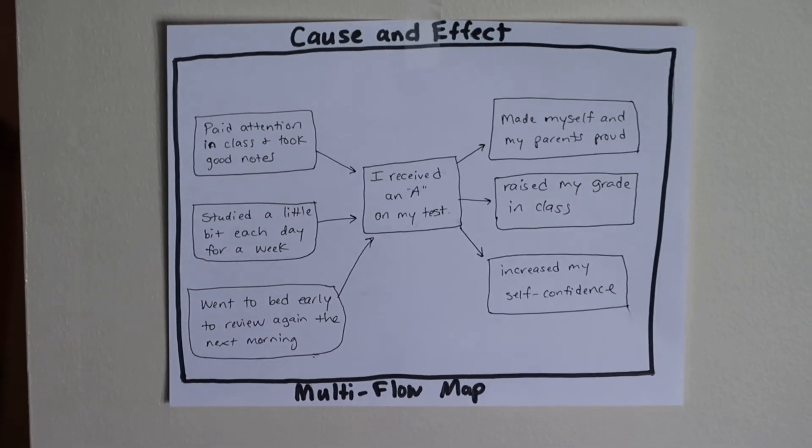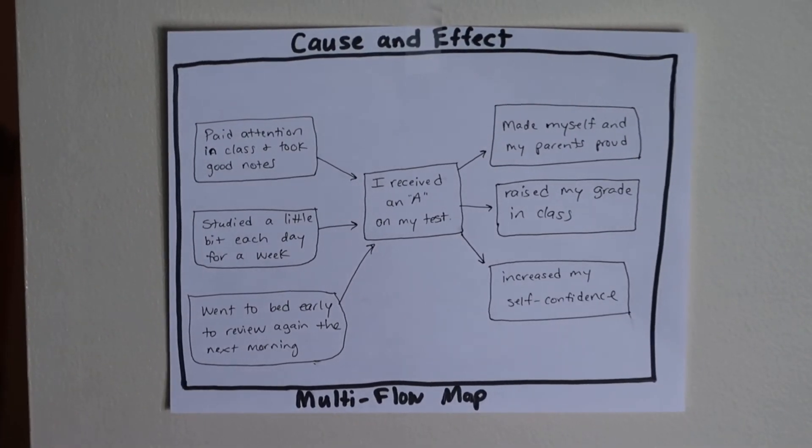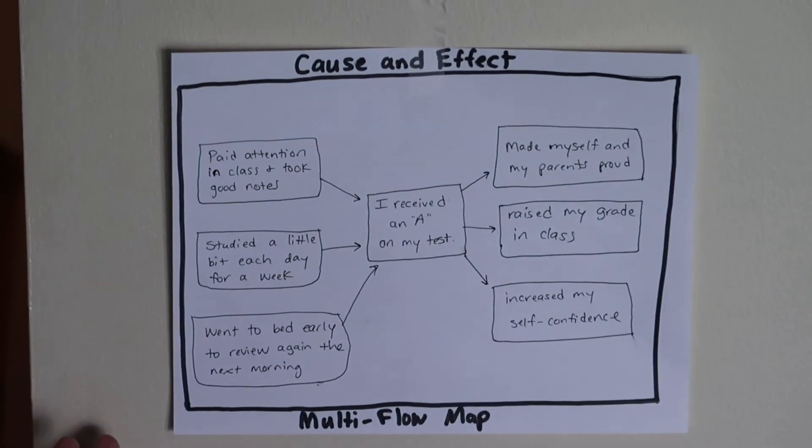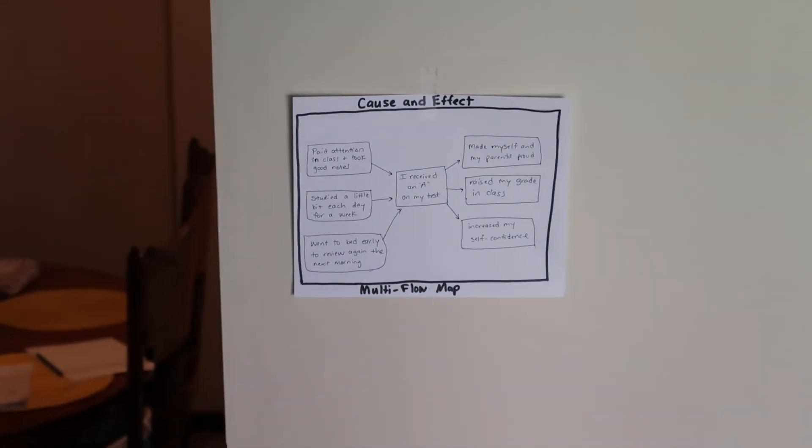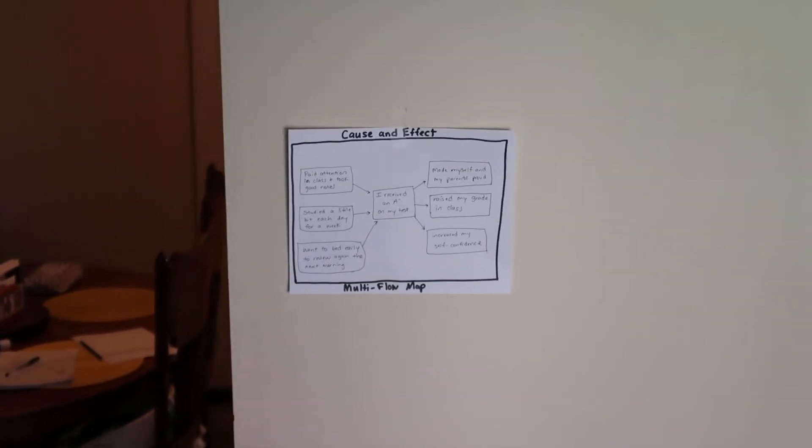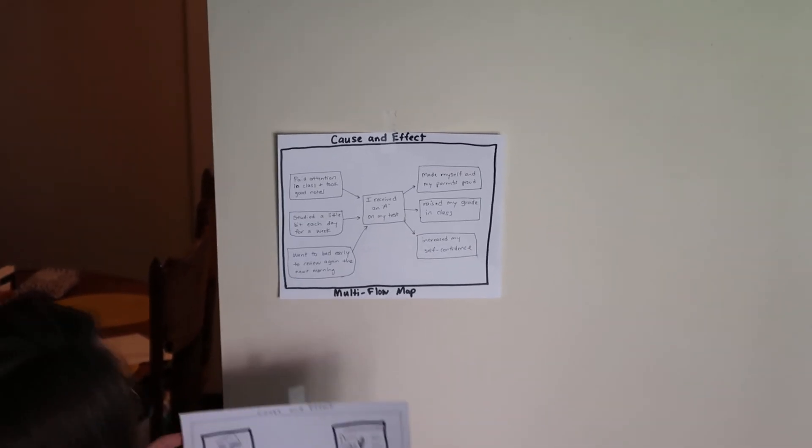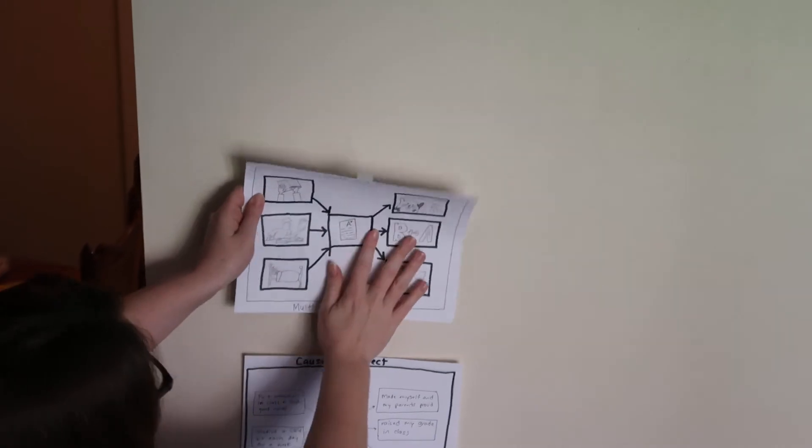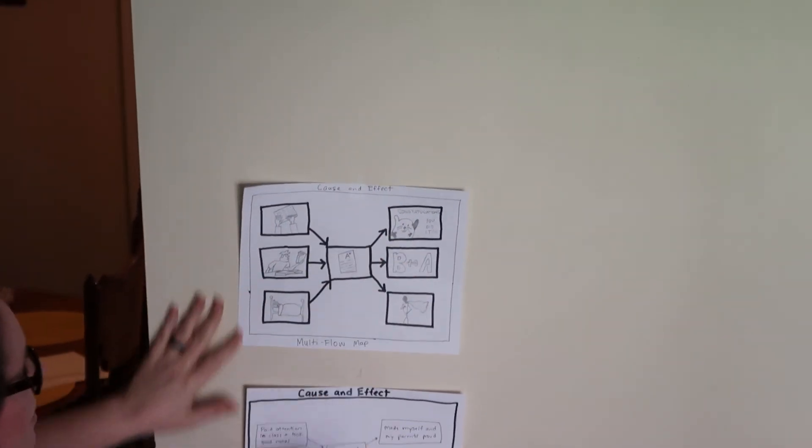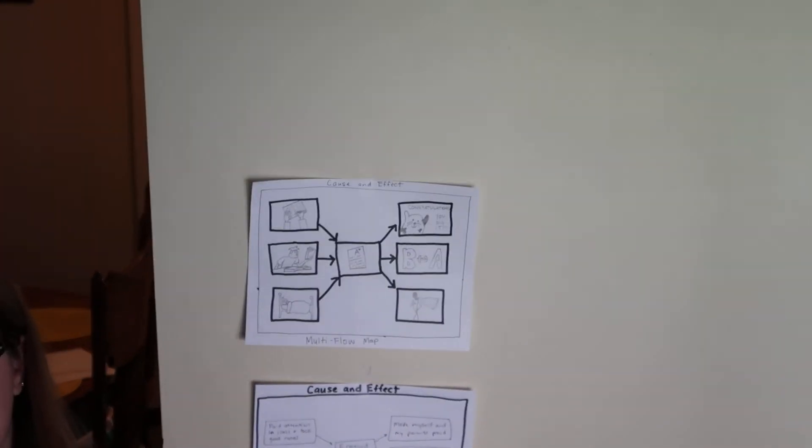So, here you can see, is an example of a completed multi-flow map with text. So, this could be what yours might look like if you choose that option. Or, for those of you out there who are super artistic, you may want to try the same thing with pictures. Because I know I had a lot of you that like to talk with your pictures instead of your words.